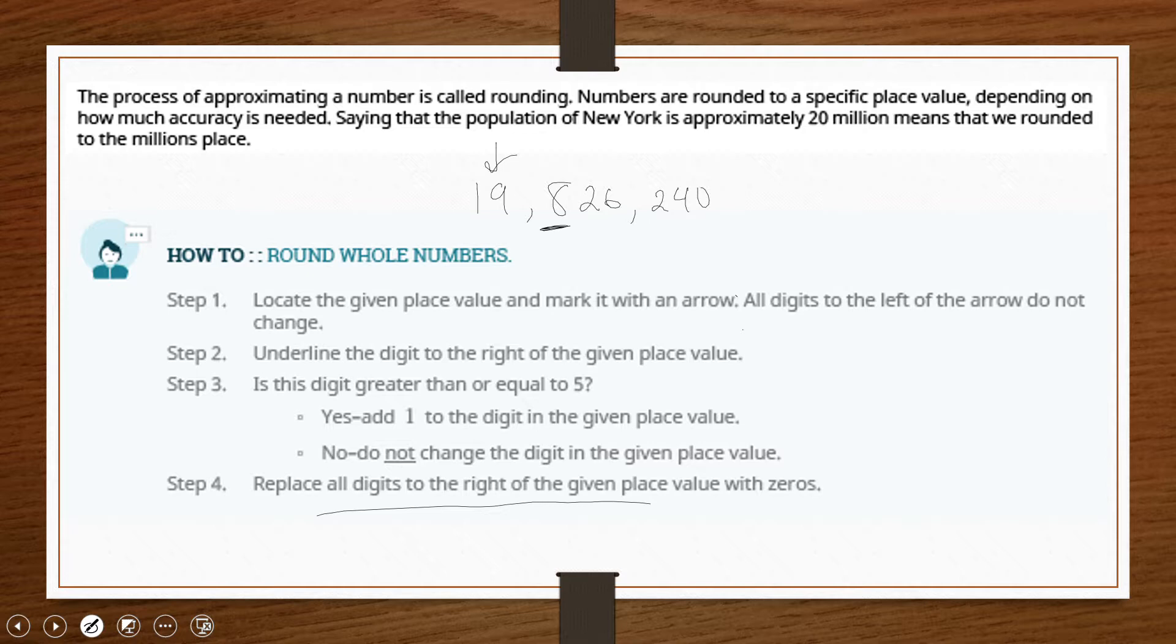And the digit to the right of that, we have to ask one of these two questions. Is it greater than five? Well, the answer is yes. Therefore, to approximate, we would say this is 20 million.